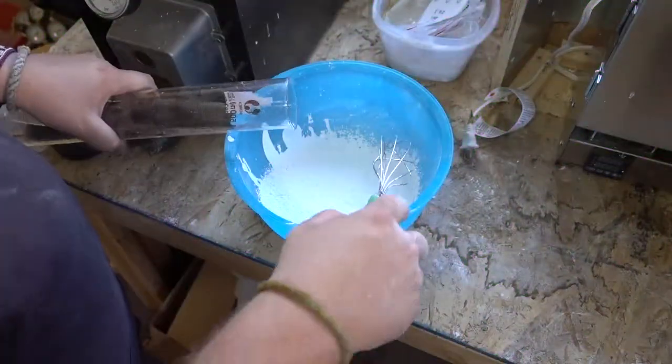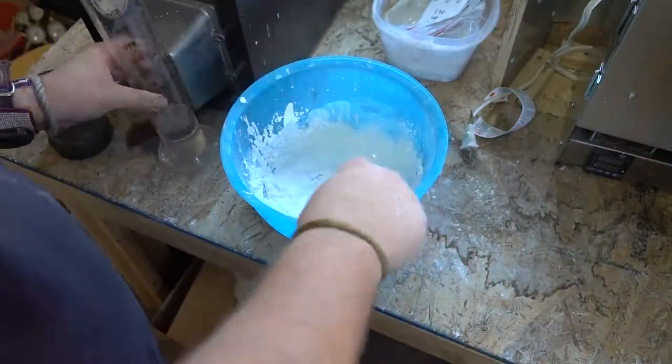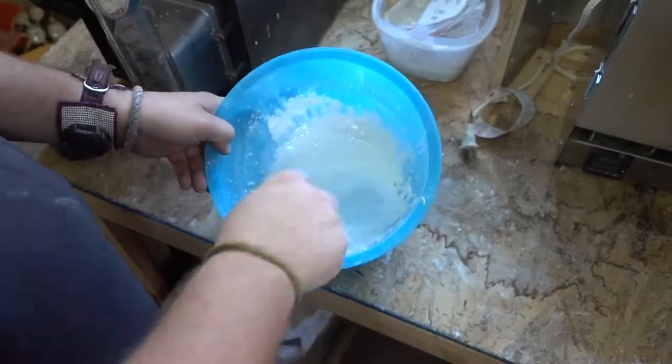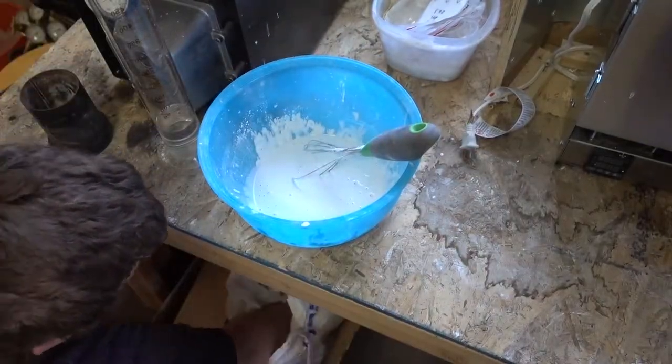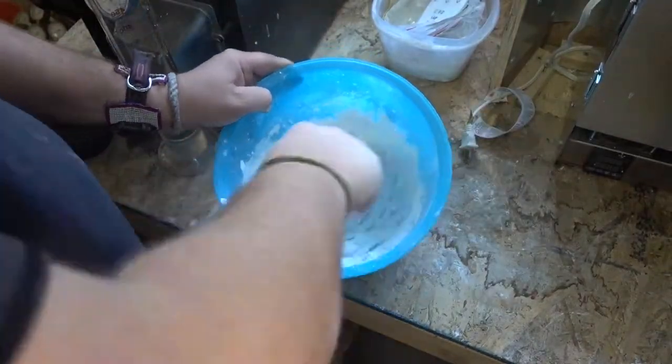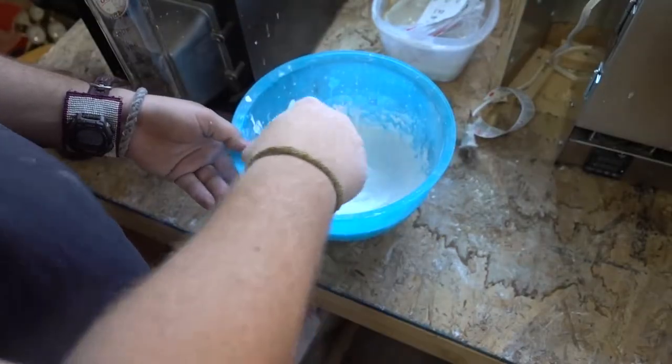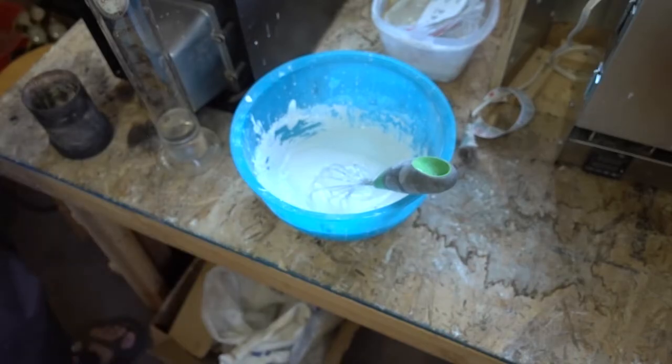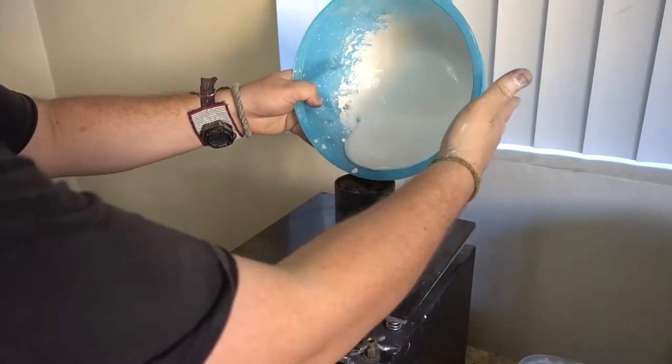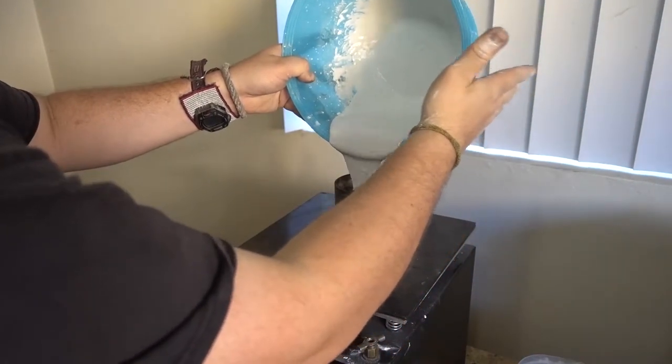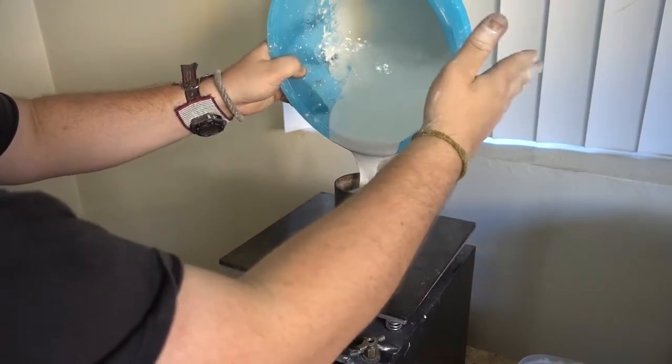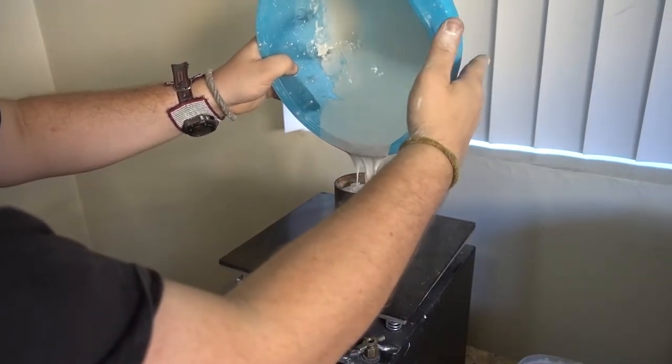We mix this powder with water—it's called investment powder, essentially a plaster specifically designed for casting. It cures really quickly, so we work pretty fast with this stuff. Then we pour it down into the flask over the ring so it fills all the little voids. Then we put it under a vacuum.